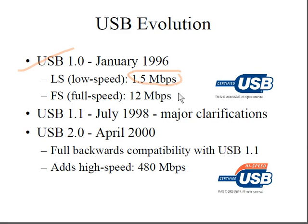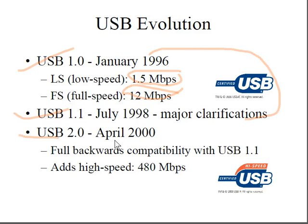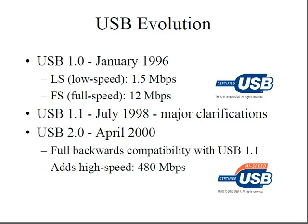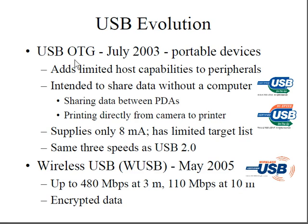USB 1.0 offered a low speed of 1.5 Mbps and a full speed of 12 Mbps. USB 1.1 introduced major qualifications after deliberation in January 1996. USB 2.0, released in April 2000, offered full backward compatibility with USB 1.1 and a speed of 480 Mbps. While an earlier slide showed average speeds, the high speed for USB 2.0 is 480 Mbps.